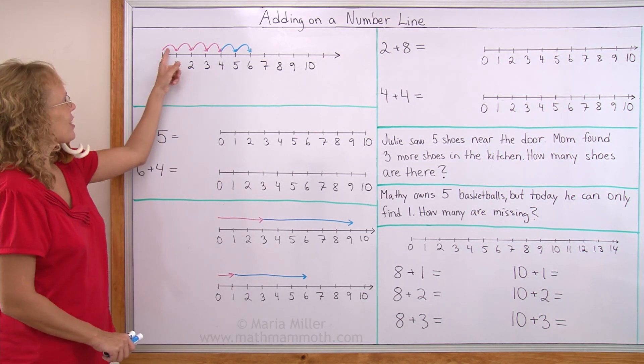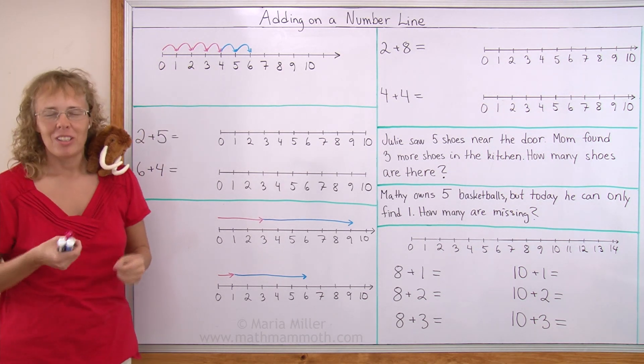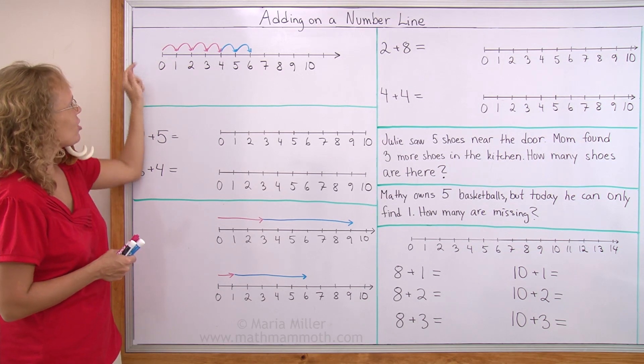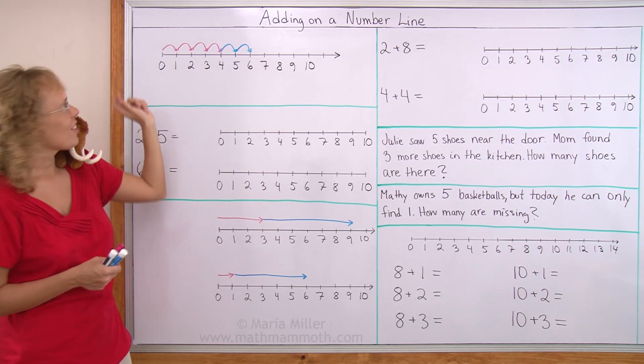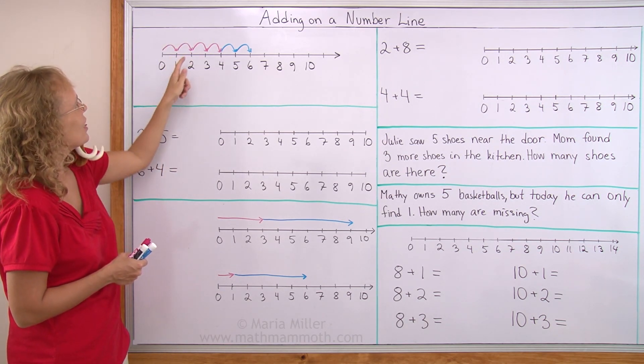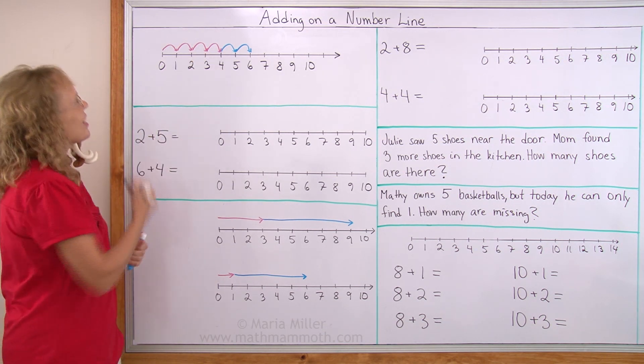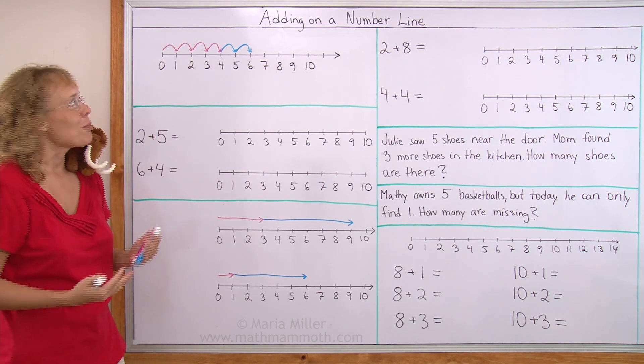Here's an example. These little red and blue things are arrows, like little jumps. Imagine, for example, like a rabbit making a little jump from 0 to 1, another little jump from 1 to 2, and then so on. So many little jumps. And then we are going to write an addition from all this jumping.